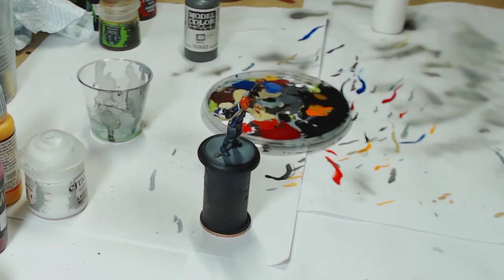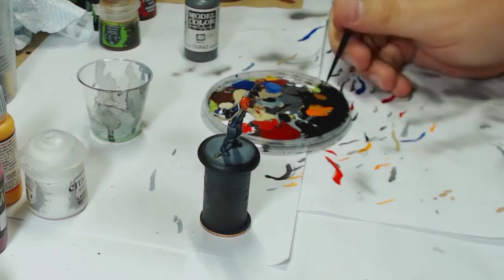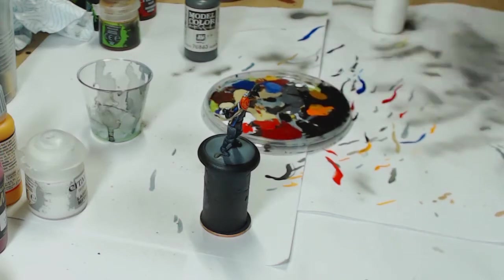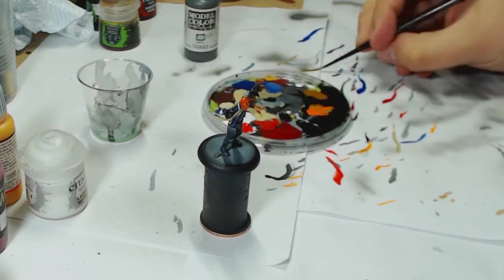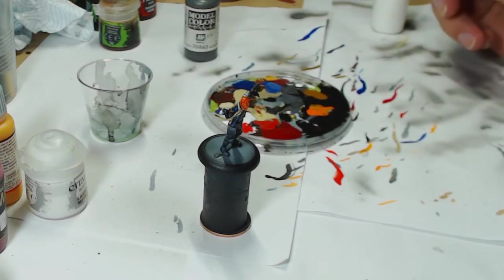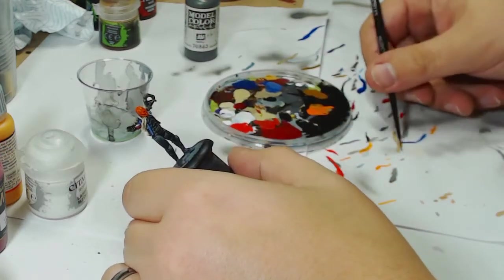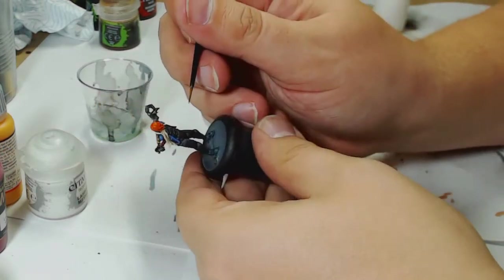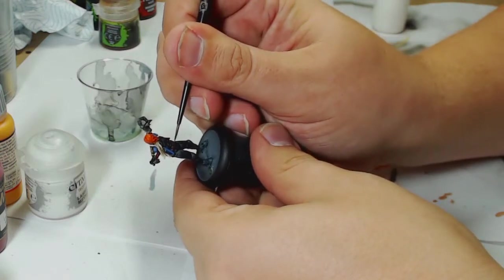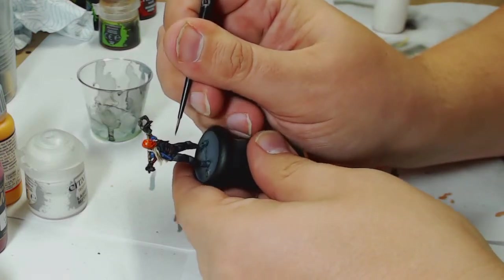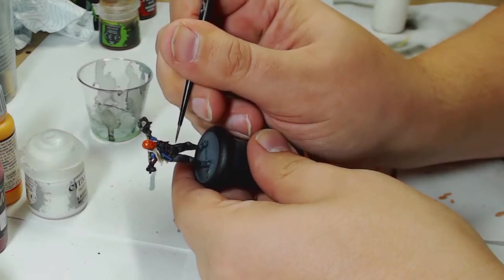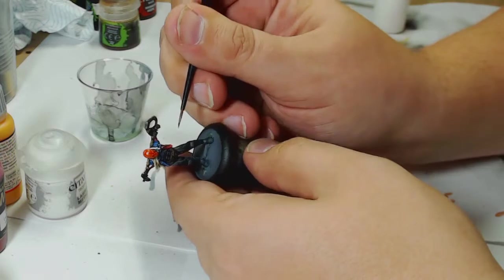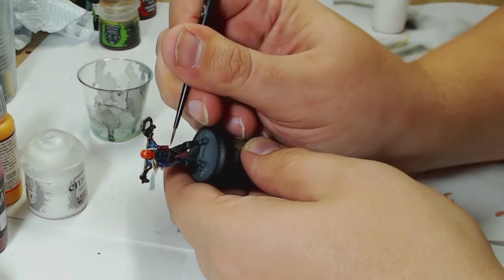Now I've got a mix for the wooden leather. I started off with a Flat Earth over the entirety of the belt and the upper regions of the wooden haft of the axe thing. And then I went over on the point highlights with Beige Brown.